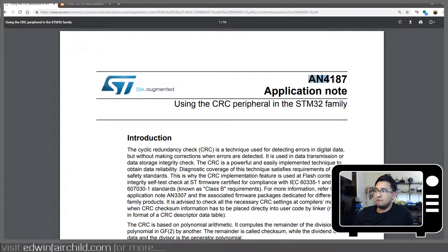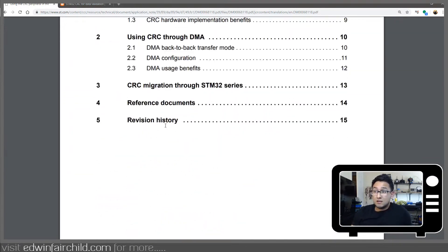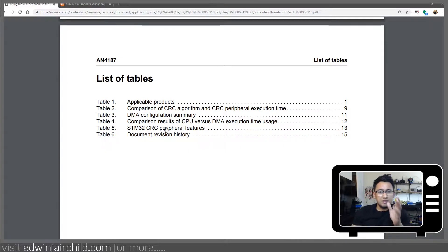It's app note 4187, cyclic redundancy check. What this does, it's a way of validating your data.